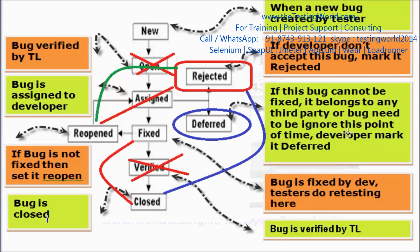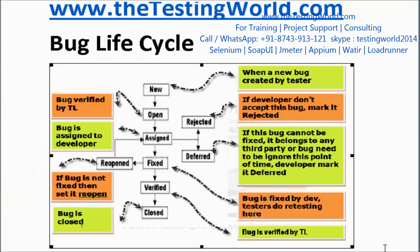The key learning point is: I will never close a bug solely based on the developer's comment. If I am not satisfied with the developer's comment, I will never close that bug on their say alone. So we've covered the theoretical bug life cycle, the practical bug life cycle, and a few interview questions. That's all for this session — thanks for watching.